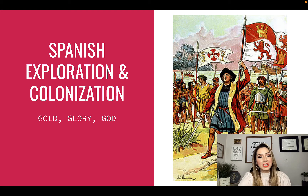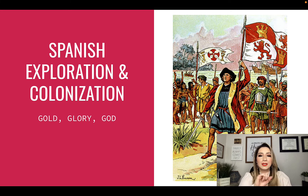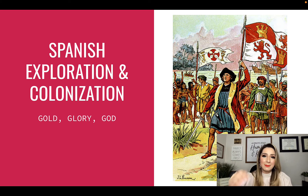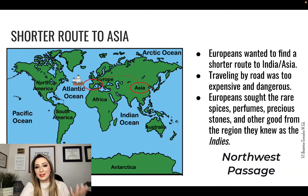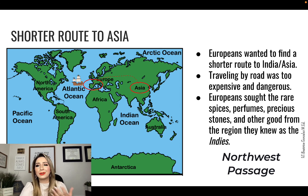Now, Spanish exploration and colonization — the three main reasons, or motives, you might have heard your teacher talk about this, are gold, glory, and God. Not in any specific order, but those are the three primary reasons. Initially, Europeans wanted to find a shorter route to get to India. India had a lot of spices and perfumes, precious stones, and goods that they didn't have in Europe.